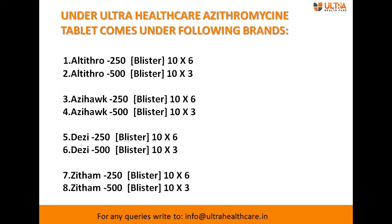Under Ultra Healthcare, azithromycin tablet comes under four different brands. The first brand is Altitrop, followed by three additional brands. All these brands have two different strengths of azithromycin — that is 250 mg and 500 mg — and come in blister packaging of 10×6 and 10×3.